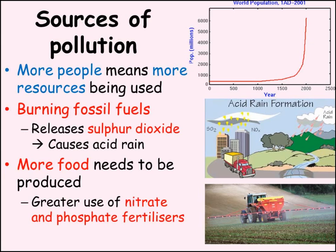So what is the problem with a growing human population? Well, more people means more resources are being used up. For example, more fossil fuels are being burnt. These release pollutants, including sulphur dioxide, into the atmosphere, which leads to acid rain when the sulphur dioxide dissolves into the water in the air before falling as acid rain.